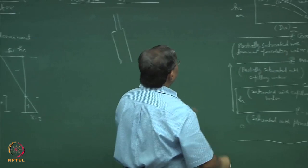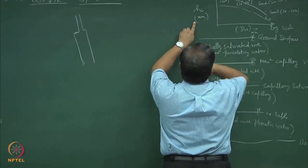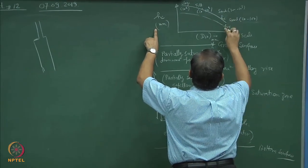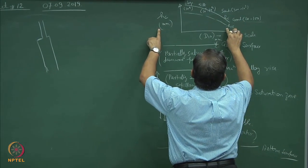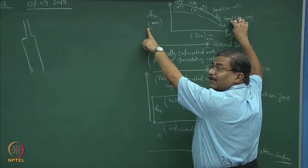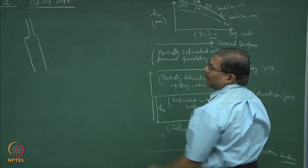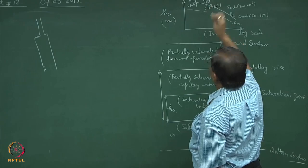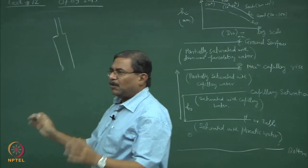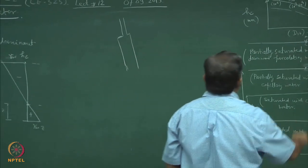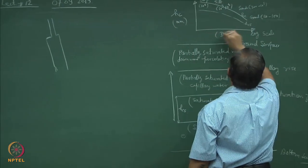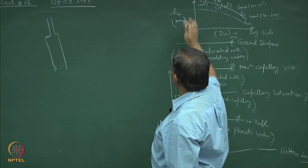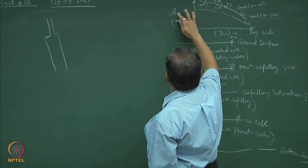So hc and hcs are in millimeters. The idea was to show the trend: as the diameter increases, the capillary height hc decreases. Do not just go by the numbers I have written — focus on the trend.